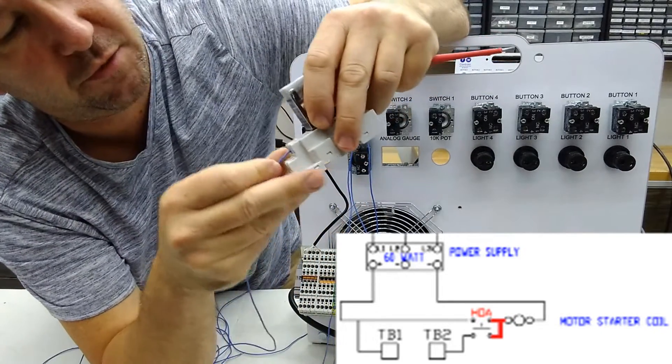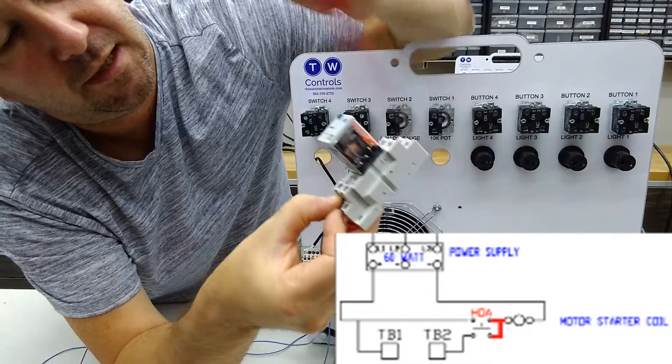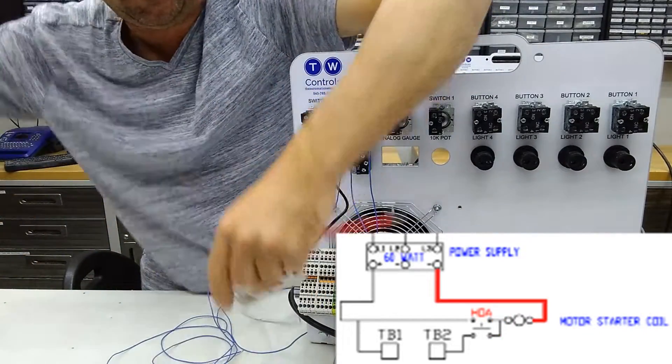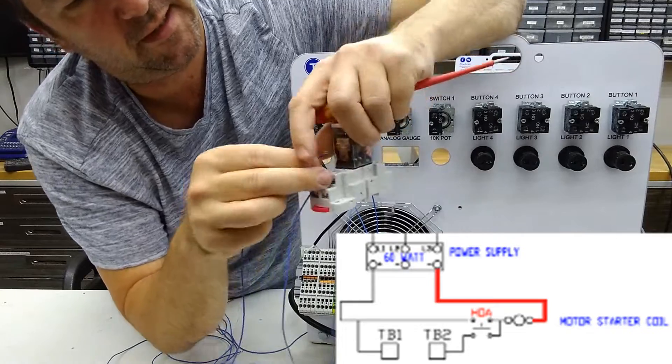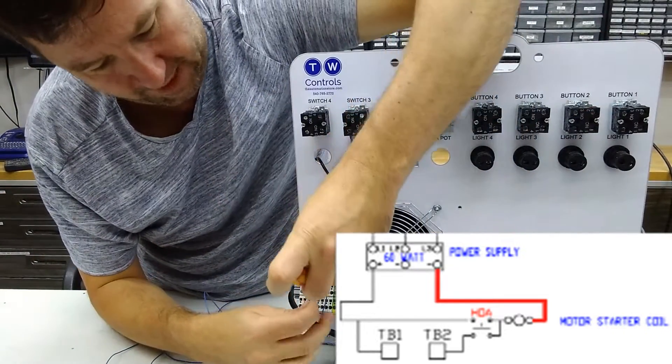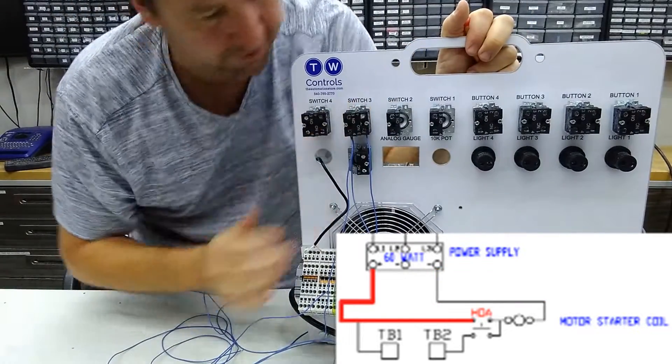And this wire will go to one side of the coil of our relay. And then we'll go ahead and connect that wire to the other side of this relay while we're doing this. Connect it to the minus of our power supply. So that leaves the top of our circuit.